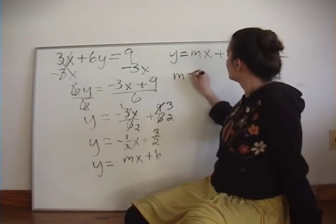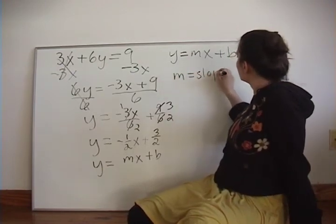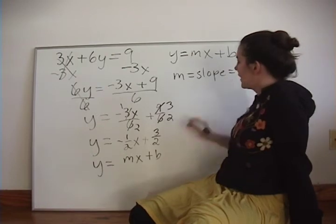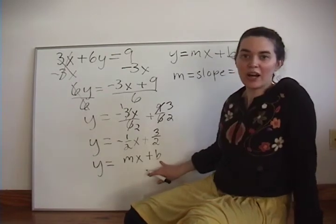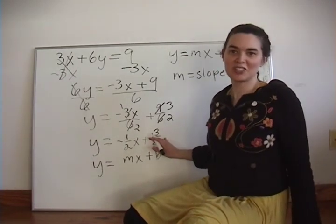And b, the y-intercept, equals 3 halves.